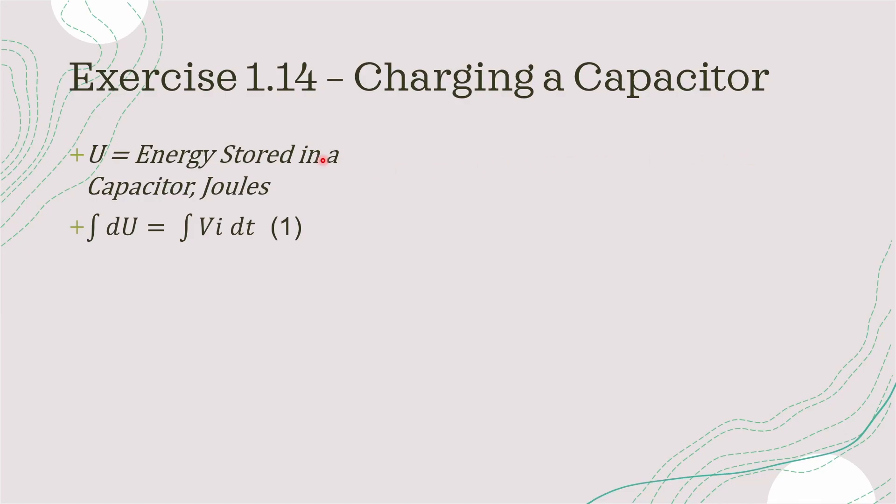So looking at the starting point here, U is the energy stored in a capacitor and unit is joules, and V times i times dt is the equation that's given to us in the question.